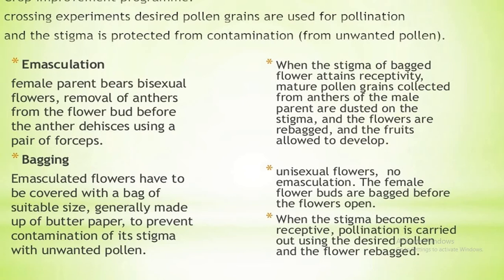If the female parent is unisexual, emasculation is not necessary. In this case, the female bud is directly bagged, and when the stigma turns receptive, suitable pollen grains are dusted onto it to allow germination, and the flowers are re-bagged.